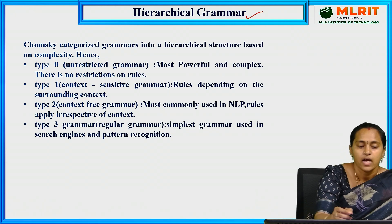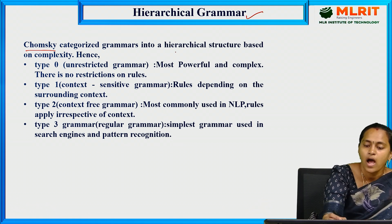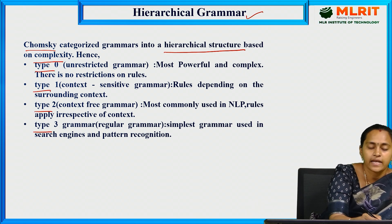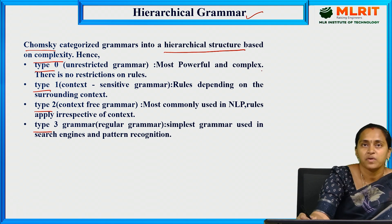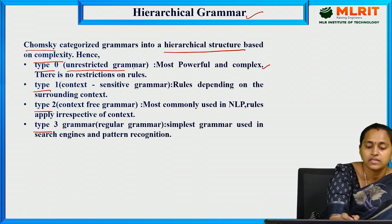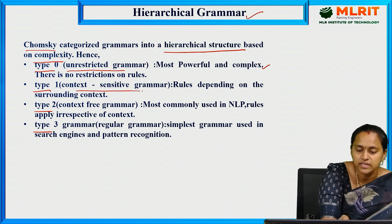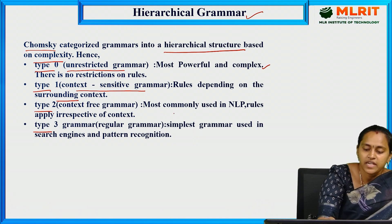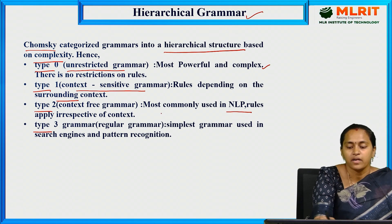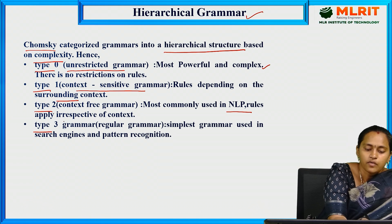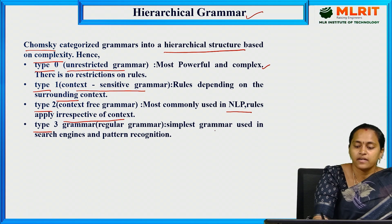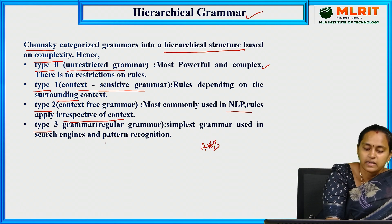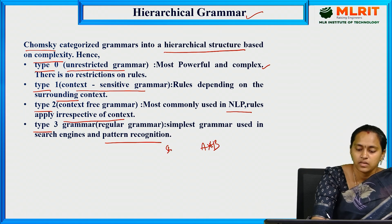Next is hierarchical grammar. Chomsky categorized grammars into hierarchical structures based on complexity: Type 0 is the most powerful and complex — it is unrestricted grammar with no restrictions. Type 1 is context-sensitive grammar, where rules depend on the surrounding context. Type 2 is context-free grammar, most commonly used in NLP for parsing sentences. Type 3 is regular grammar — for example, A* B — used for regular expressions, simplifying patterns into strings.